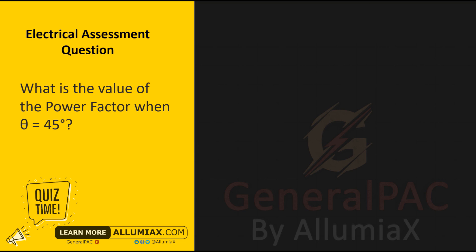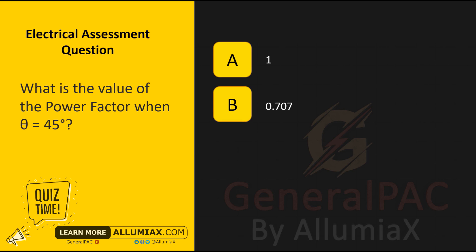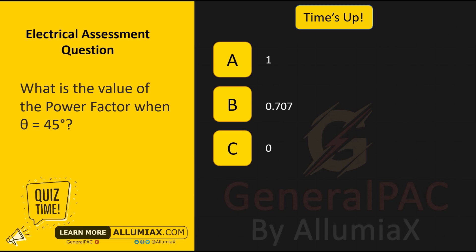What is the value of the power factor when theta equals 45 degrees? A: One, B: 0.707, C: Zero. Time's up. The answer is B: 0.707.